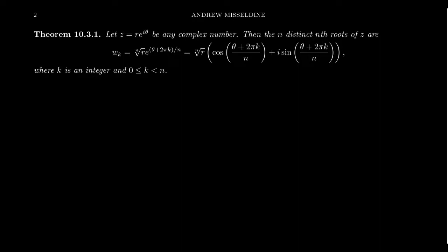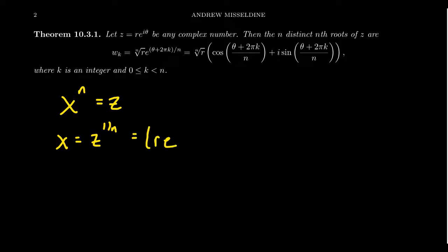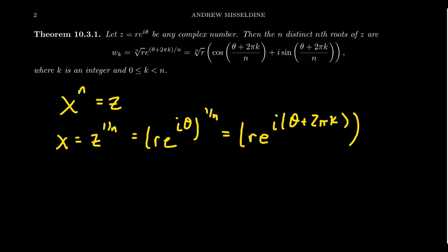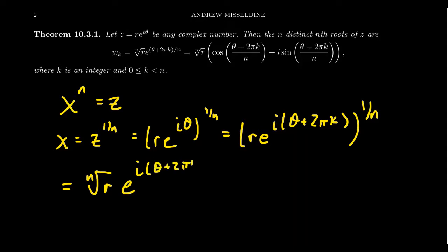Why does this work? We're solving x^n = Z. So x equals Z^(1/n), and in polar form that's (re^(iθ))^(1/n). We rewrite θ as θ + 2πk, since replacing θ with any coterminal angle gives the same complex number. Raising to the 1/n power then gives r^(1/n) — the nth root of r — times e^(i(θ + 2πk)/n). This is how you compute complex roots in polar form.